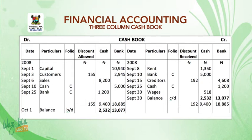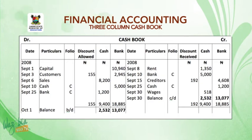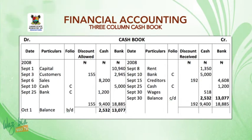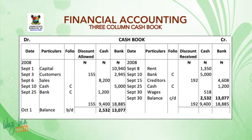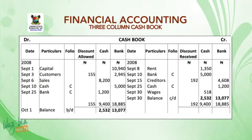Then the next transaction, September 15 — paid creditors by check, less 4%, as calculated earlier. Money goes out, so on the 15th you record it on the credit side. Under particulars write 'creditors', under discount received write $192, and under bank write $4,608.